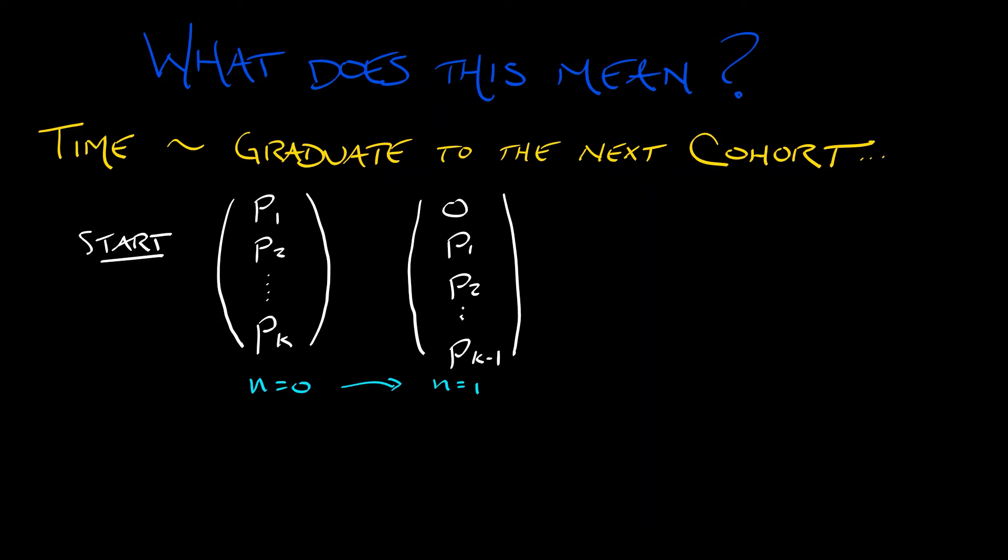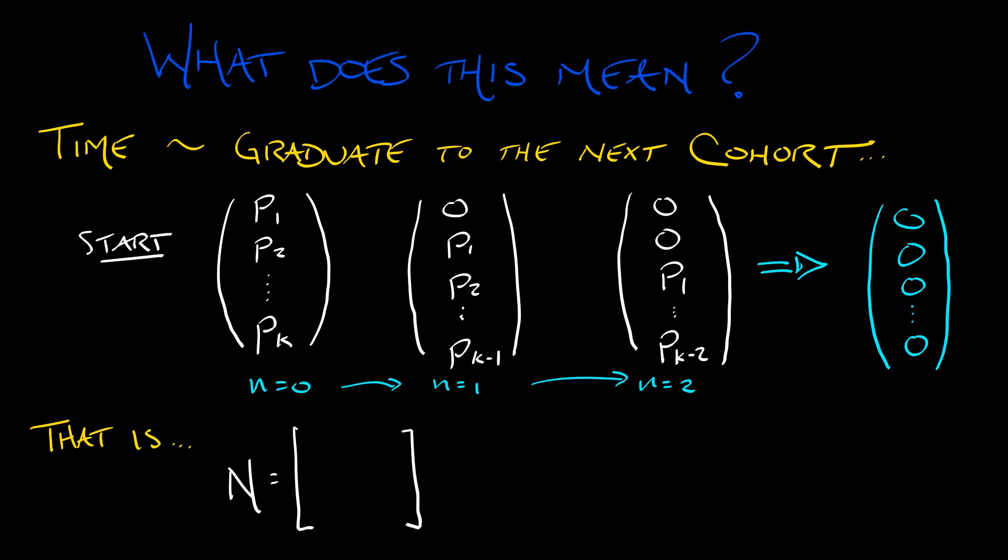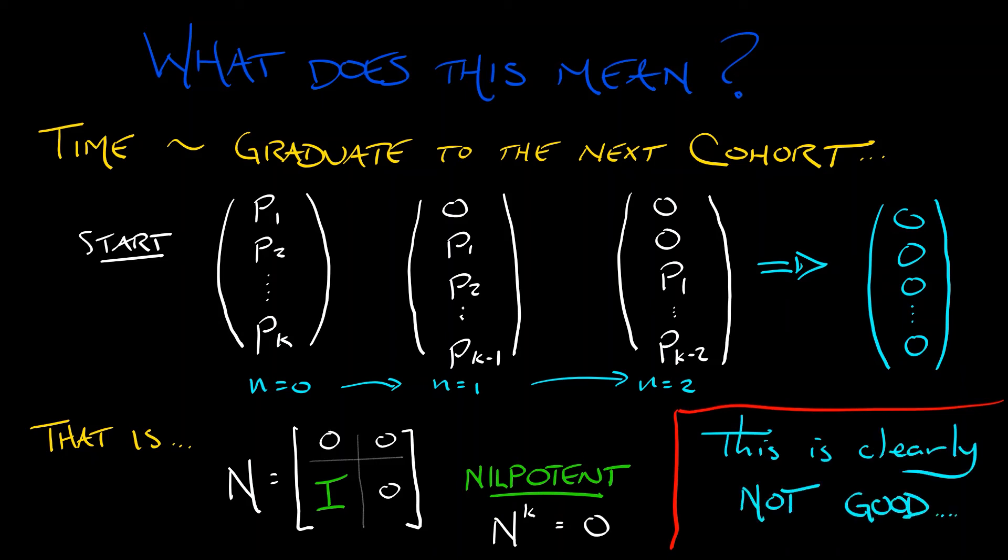So the population size has just moved. And then after another time step, our population vector is 0, 0, p1, p2, all the way up through pk minus 2. Gee, what happened to pk minus 1 and pk? Oh, right. They did what everything does. Eventually, you go to 0, 0, 0, 0, 0. That is, if we think about this matrix N that in block form has 0s everywhere except for an identity matrix along that subdiagonal in that lower left-hand corner, then this matrix N is nilpotent. If I take N and multiply it by itself k times, I get the 0 matrix. This means everybody dies. Everybody keeps graduating to the next cohort till there's nobody left. And this is clearly not a good model for population dynamics. We would like something a little bit better than that.